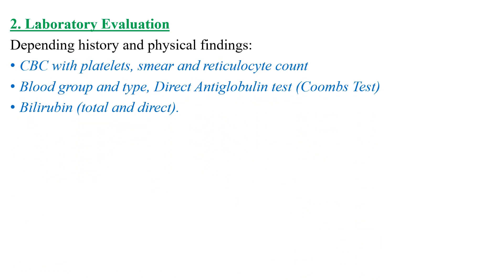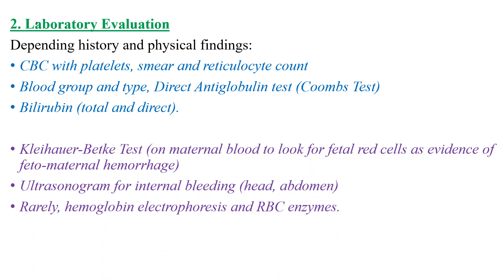Laboratory evaluation depends on history and physical findings. CBC with platelets and smear and reticulocyte count, blood group and type, Coombs test if we suspect hemolytic disease due to Rh or ABO incompatibility, and bilirubin total and direct to see whether there is hemolysis. Ultrasonography for internal bleeding such as transfontanelle brain ultrasound for IVH, and abdominal ultrasound for viscous damage or rupture, and hemoglobin electrophoresis.